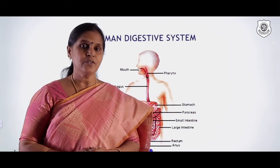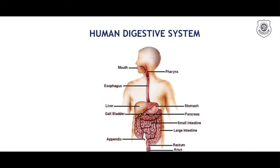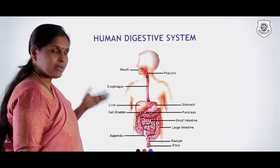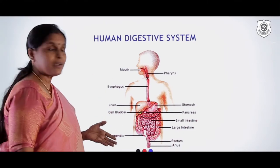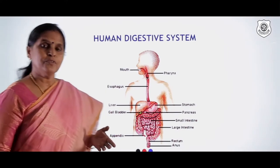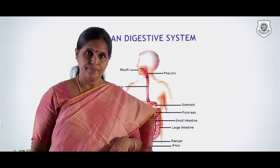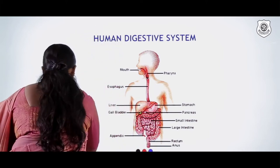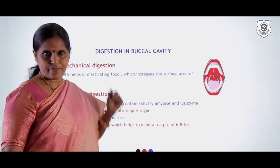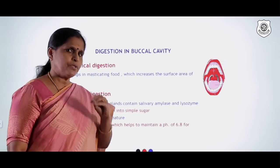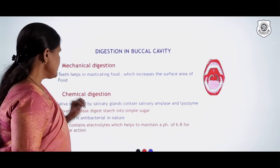Namaste students. In the previous module I taught you the structure of the human digestive system. Now we'll have a look at the function of each part. Let's just recollect the different parts — food is taken through the mouth, which leads to the buccal cavity, and now we'll go into the functional aspects.